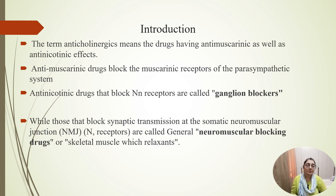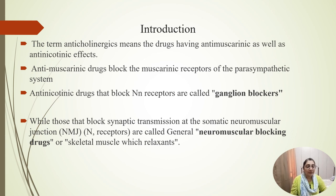The term anti-cholinergic means the drug having anti-muscarinic as well as anti-nicotinic effect. Anti-muscarinic drugs can block the muscarinic receptor of the parasympathetic system, and anti-nicotinic drugs that block the N receptor are called ganglionic blockers when they block sympathetic transmission at the somatic neuromuscular junction.